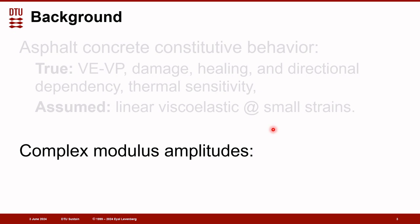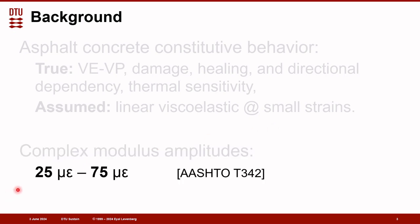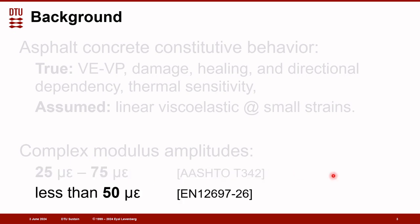Therefore, we carry out complex modulus characterization. The amplitudes to keep the strains small are between 25 microstrains and 75 microstrains according to the American protocol, and they should be less than 50 microstrains according to the European protocol.